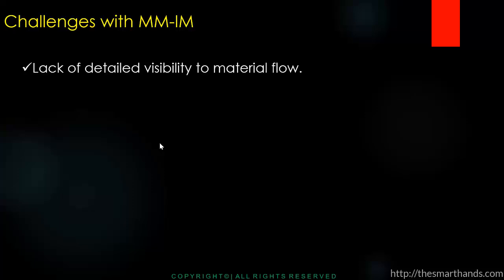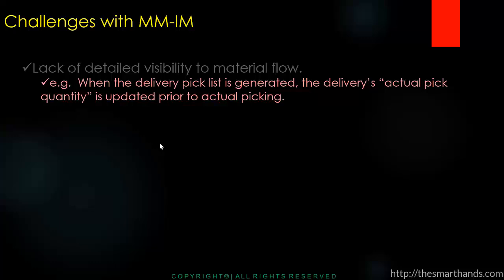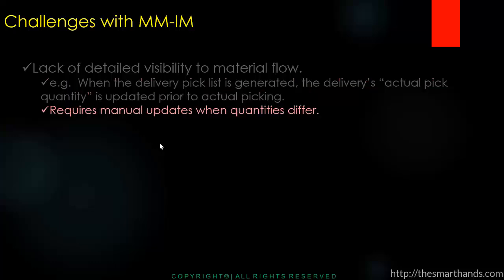For example, when using inventory management, as soon as you complete the MIGO transaction the system shows the material in stock. But in reality, the material still needs to be physically placed somewhere — a forklift driver picks it up, takes it to a designated area, and then to a rack. On the MM side it still shows in stock even though those physical processes are not yet complete, illustrating the lack of detailed visibility of material flow.